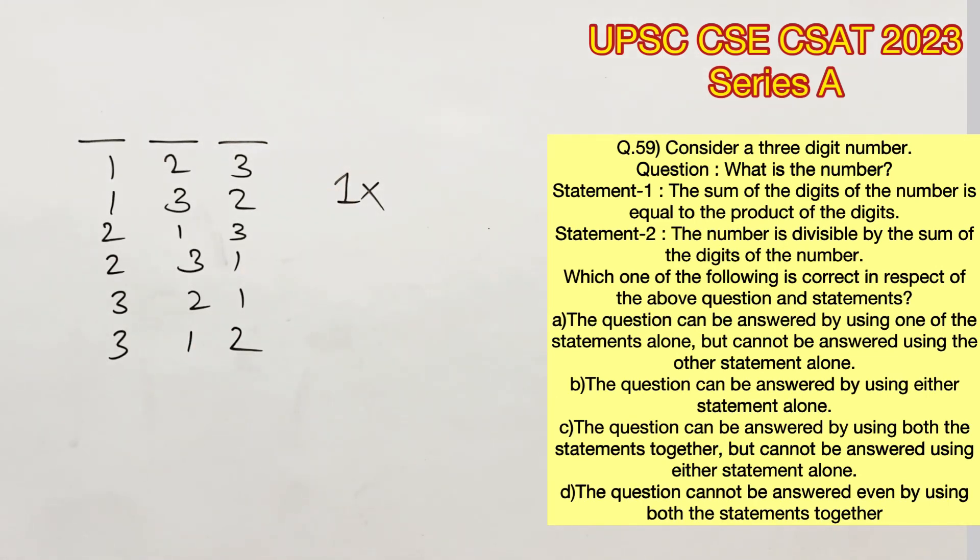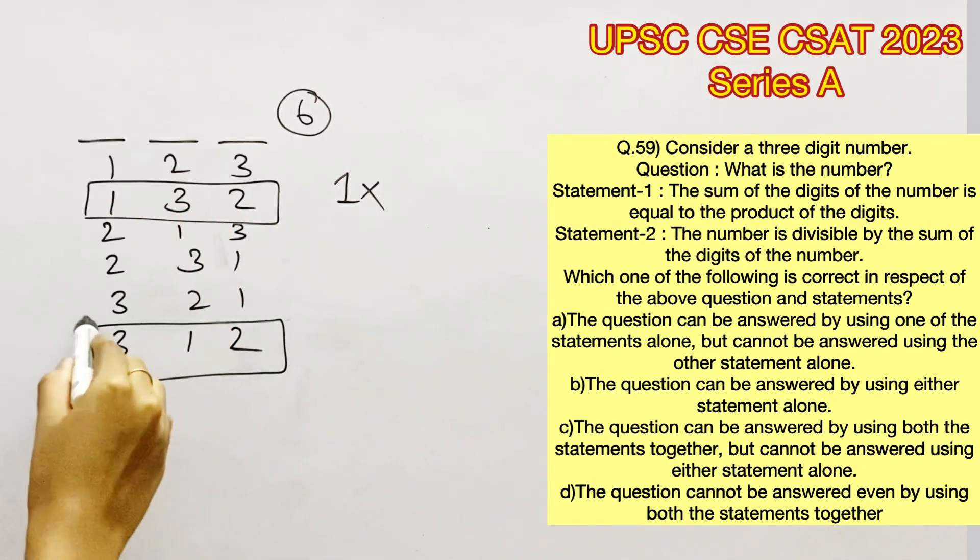Statement 2 says the number is divisible by the sum of the digits of the number. We know that the sum of the digits of the number is 6, and for a number to be divisible by 6 it has to be an even number because 6 is also an even number.